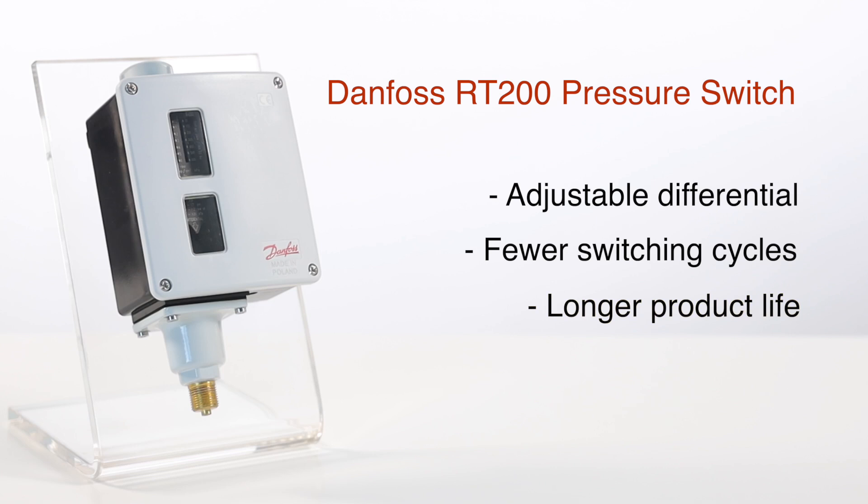In our example, we'll be demonstrating how to set up a Danfoss pressure switch for rising pressure applications. We've chosen an RT200 with a measuring range of 0.2 to 6 bar and a differential of 0.25 to 1 bar.